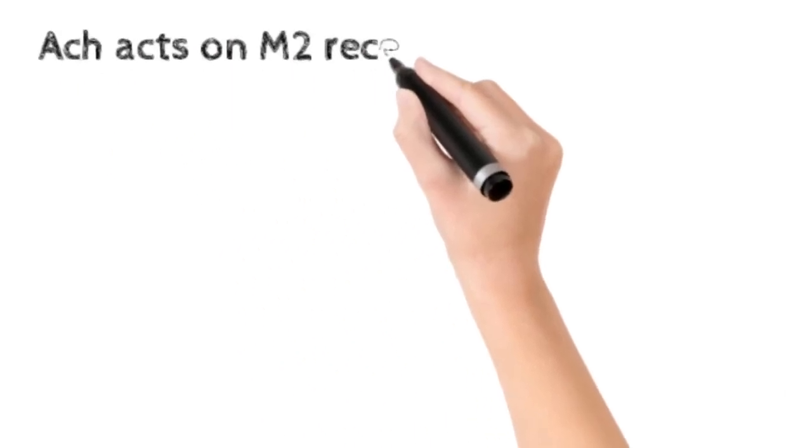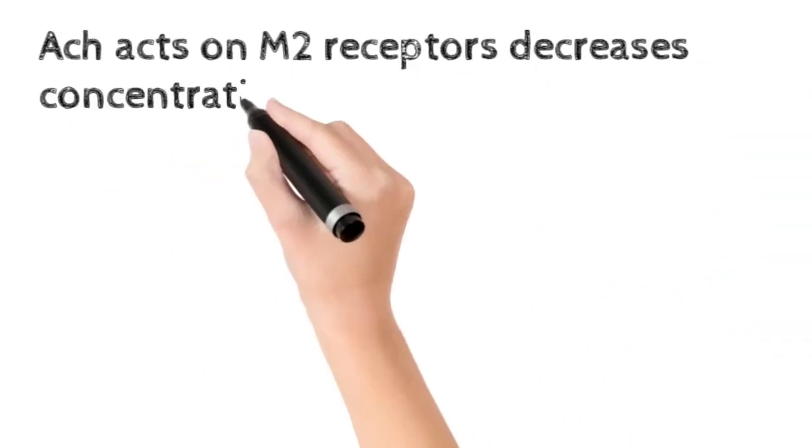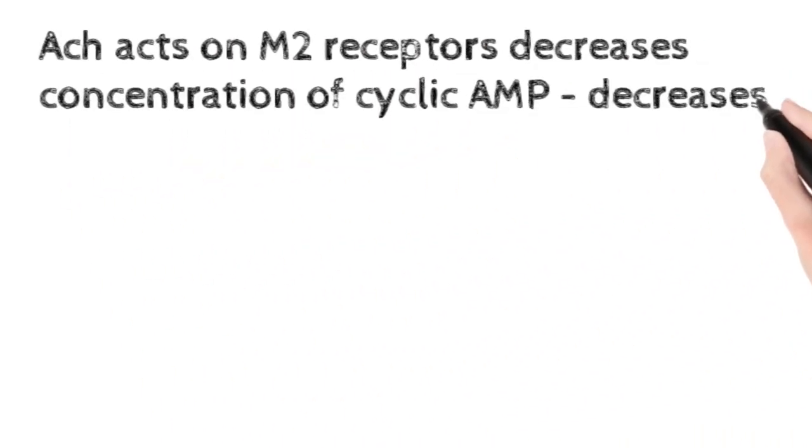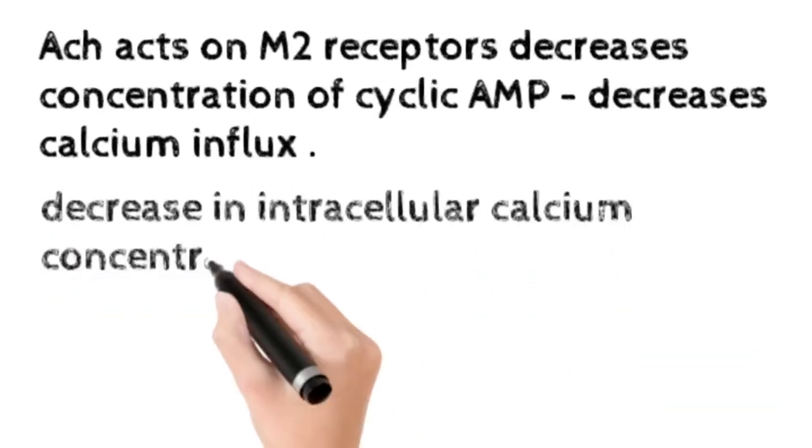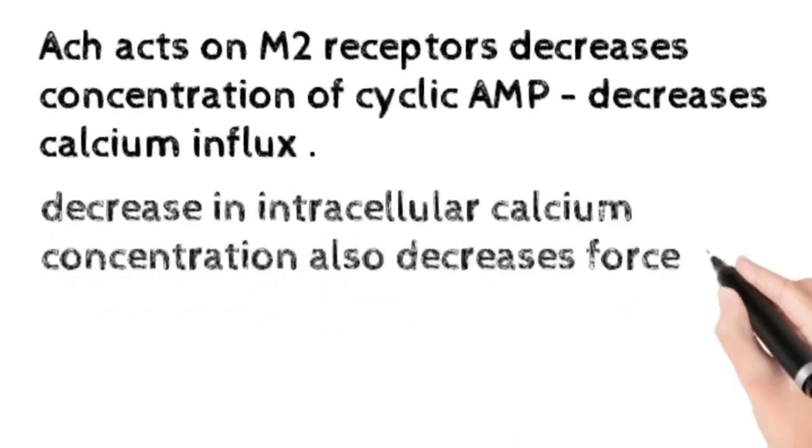It also acts on M2 muscarinic receptors that decrease the concentration of cyclic AMP, decreasing calcium influx. Decrease in intracellular calcium concentration decreases the force of contraction.